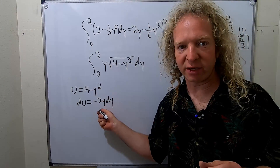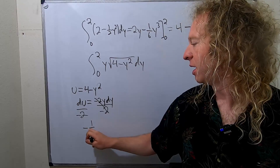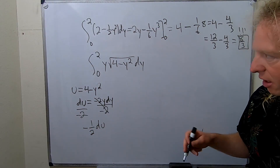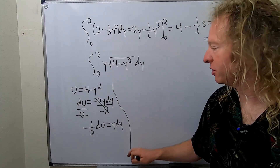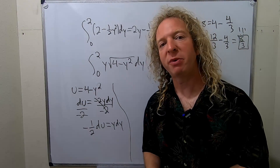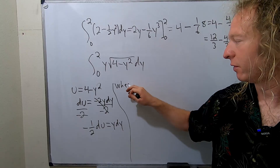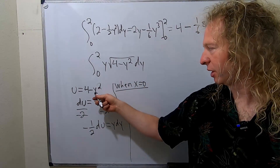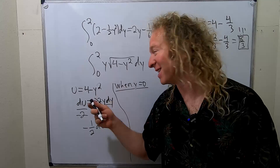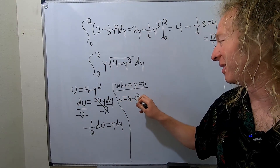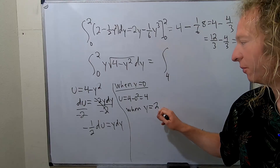We have to get rid of the negative 2, so divide both sides by negative 2: y dy equals negative one-half du. Since it's a definite integral we also change the limits. When y equals 0: u equals 4 minus 0 squared, so u equals 4. When y equals 2: u equals 4 minus 4, so u equals 0.